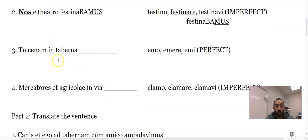Okay, tu cenam in taberna - emo, emere, emi, it's the perfect tense. Emi is the perfect tense. We got tu as our subject, that's second person singular. Em- and I add -isti, emisti.